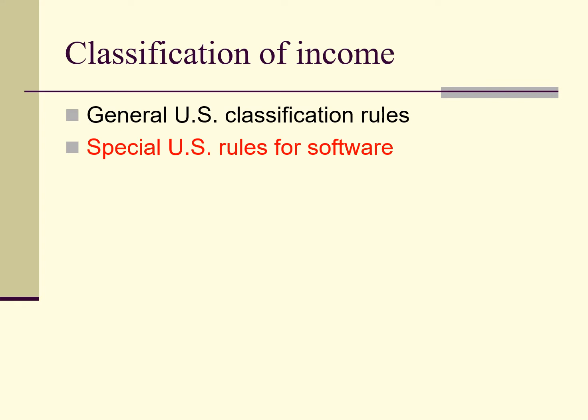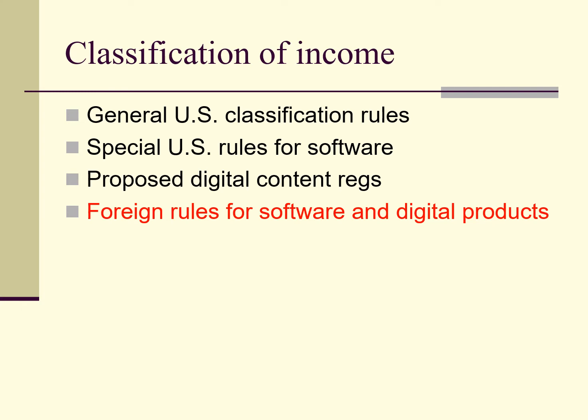The text addresses special rules for the classification of transactions involving computer software programs. These rules cover both physically delivered and electronically delivered software. The rules do not specifically apply to other digital products, but in some cases can be applied by analogy to these products. Note, however, that the regulations proposed in 2019 would revise the software classification regulations, renaming them classification of transactions involving digital content, so that the same classification rules would apply to all digital content, including software.